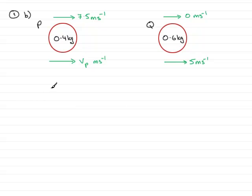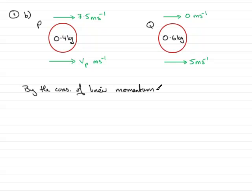By the conservation of linear momentum, the momentum before impact — that's of P and Q — is equal to the momentum after impact. Momentum is mass times velocity. You've got to be careful in questions like this to make sure you have a plus direction, because you're dealing with vector quantities. I'm going to take movement to the right as positive.